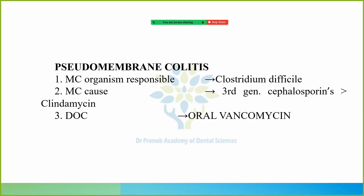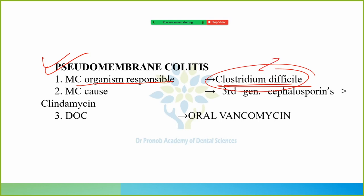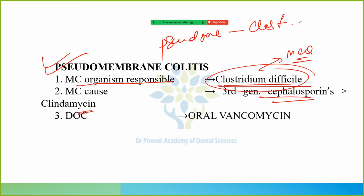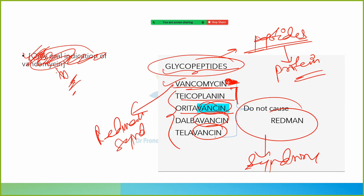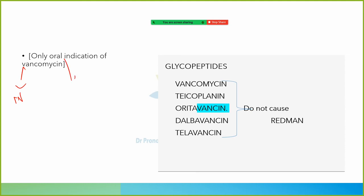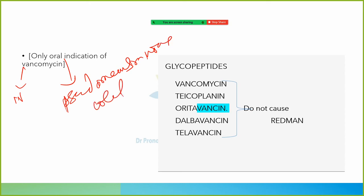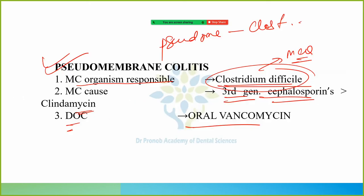For pseudomembranous colitis, the most common organism responsible is Clostridium difficile. The most common cause is 3rd generation cephalosporins, greater than clindamycin. Drug of choice is oral vancomycin. Even though vancomycin is given IV normally, the only oral indication is pseudomembranous colitis. With this, we finish with our cell wall synthesis inhibitors.